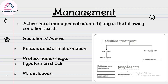Active management is indicated when: gestation is more than 37 weeks, the fetus is dead or has malformations like anencephaly or hydrocephalus, there is profuse hemorrhage, hypertension, or shock, or the patient is in labor. For type 1 and type 2 anterior placenta previa, ARM plus or minus oxytocin is used depending on the Bishop score. If satisfactory progress occurs without bleeding, proceed to vaginal delivery; if bleeding continues, perform cesarean section. For type 2 posterior, or type 3 or 4 placenta previa, cesarean section is definitively the line of management.